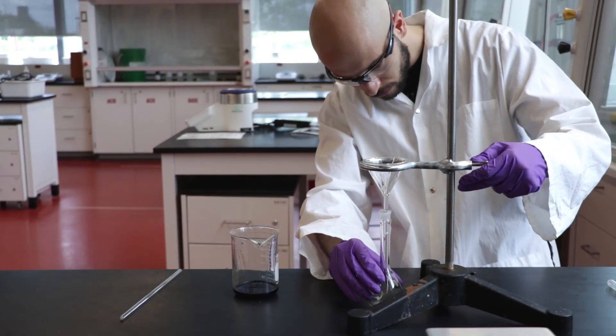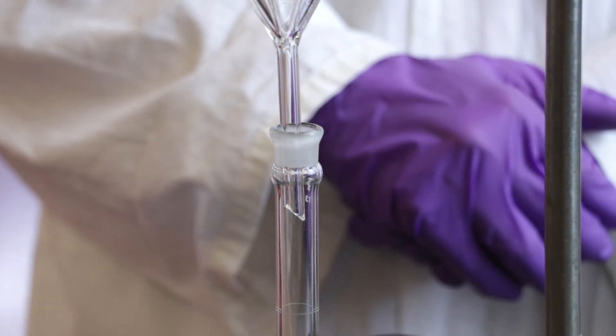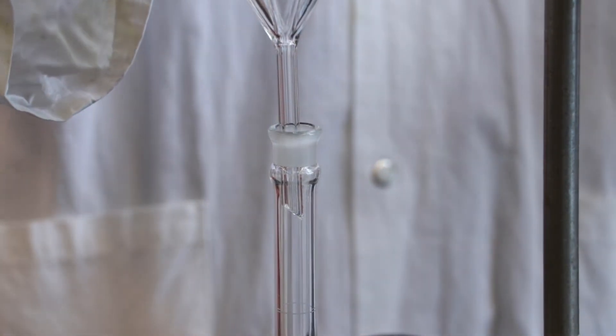Adjust the position of the ring clamp so that the funnel tip rests inside the volumetric flask approximately 2 to 3 centimeters.